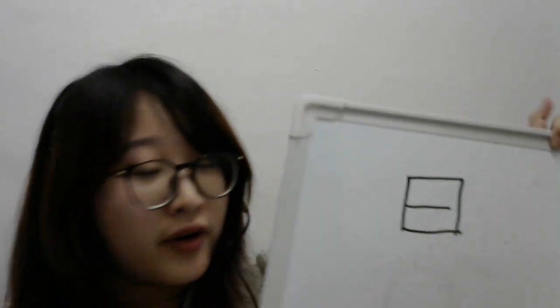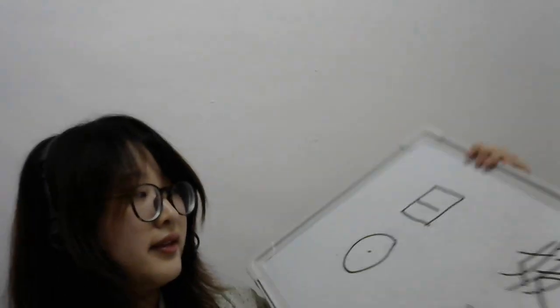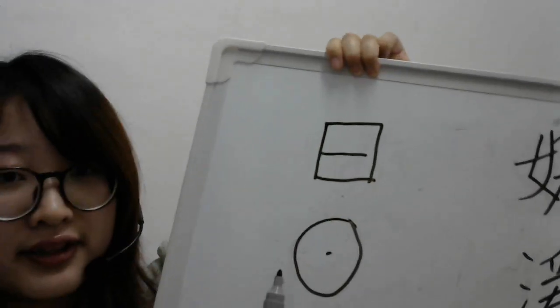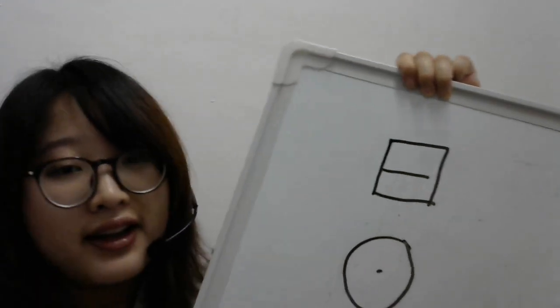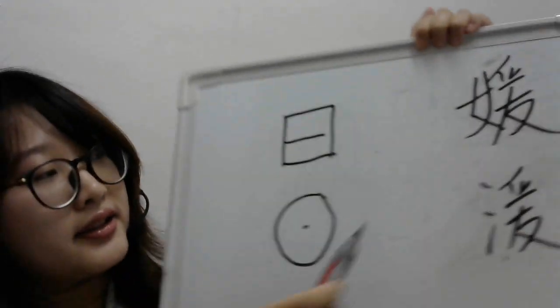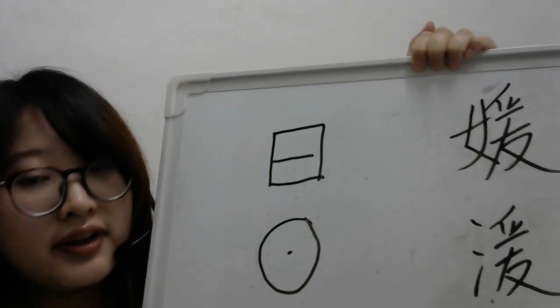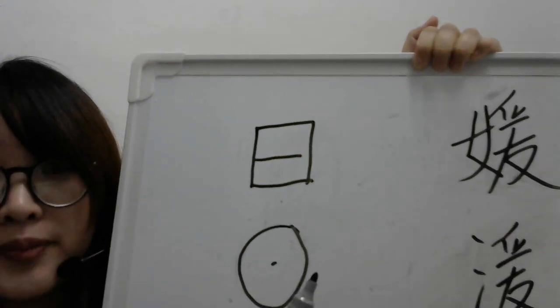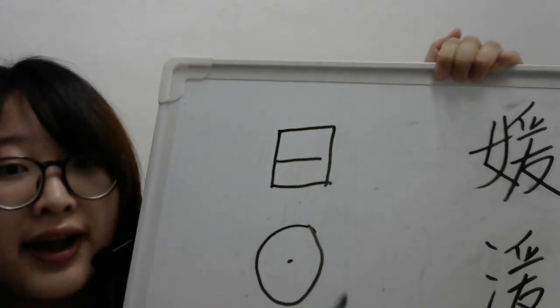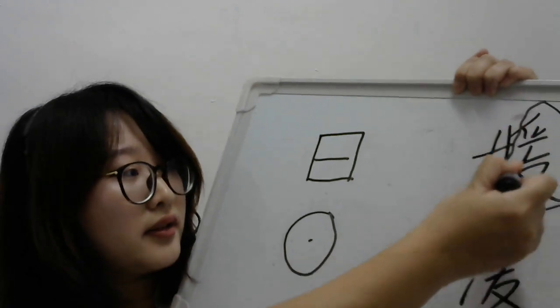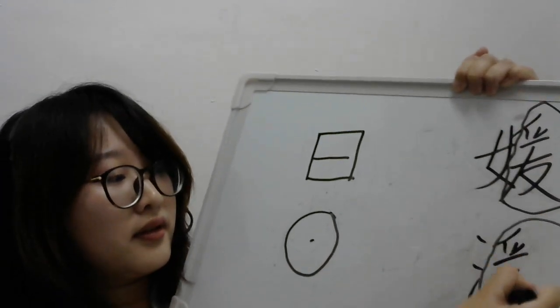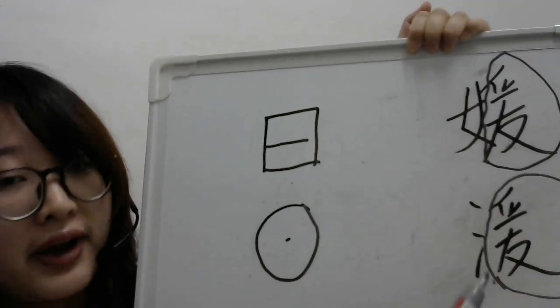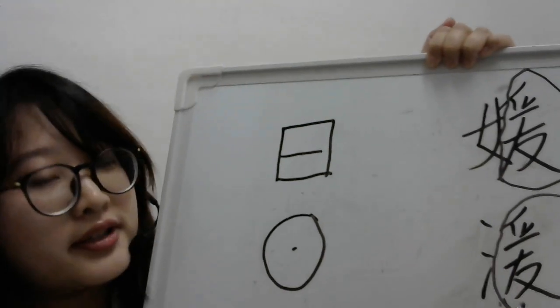Let me draw for you. They are alike, right? And then, look at these two characters. 圆. They have the same pronunciation because they all have this part. This part, right? This part is pronunciation.